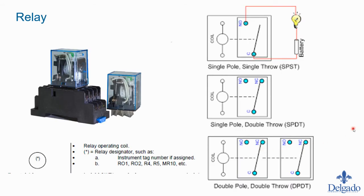Relays are typically what we call an interposing device. What happens is the PLC output will energize the relay coil, and when we energize the relay coil, it'll actually change contact states. A relay is basically a switch that we can control automatically. You can see here it says DC 24 volts — that's the coil wire. When we put 24 volt DC on this coil, it turns into an electromagnet.